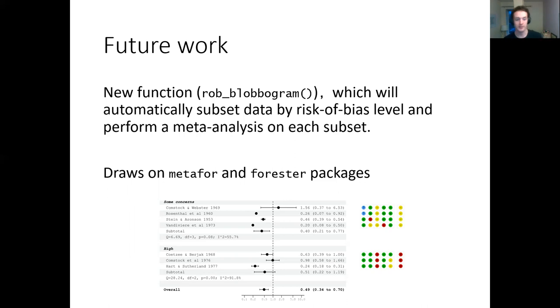As shown in the figure at the bottom, you split your studies into some concerns and high risk. You get an overall effect estimate for each group, and then one overall for all the studies combined. Again, this will draw on the metafor and the forester packages.